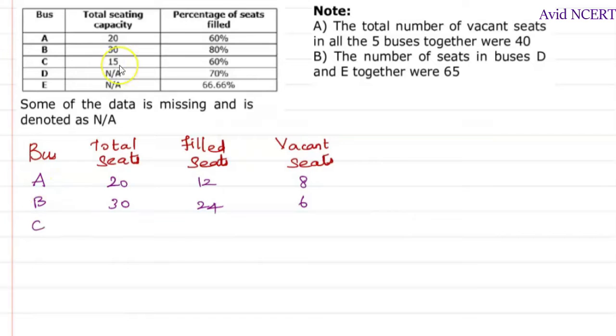And for bus C, total seating capacity is 15. Out of this 15, 60% seat is filled which is 15 times 60 by 100. Zero gets cancelled and simplifying this answer will be 9, and the difference is 15 minus 9 is 6. So the vacant seats available in bus C is 6.